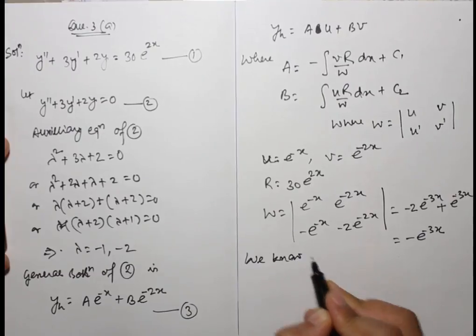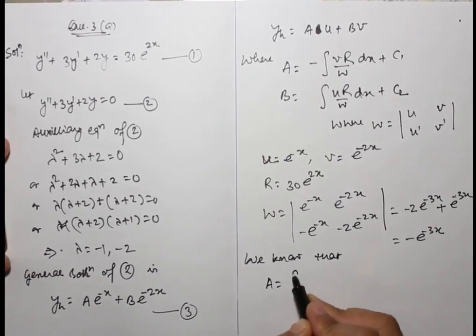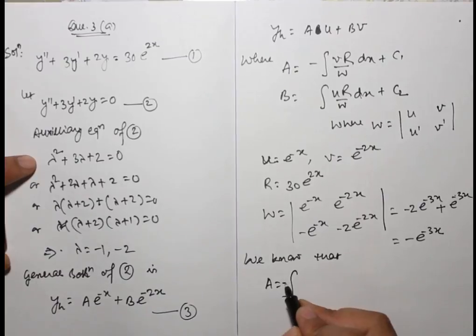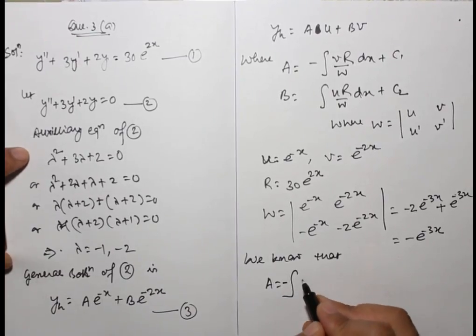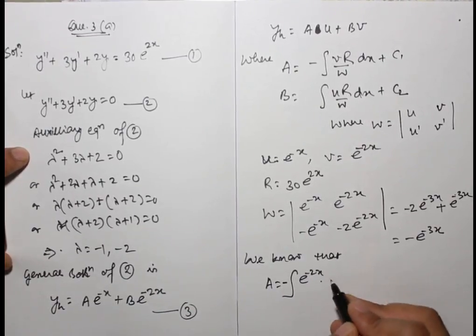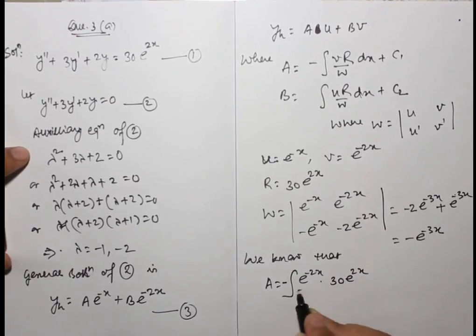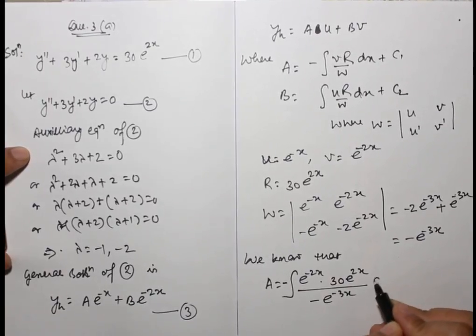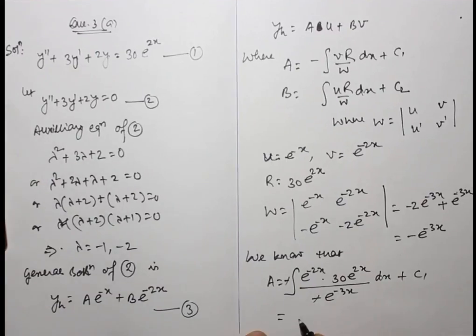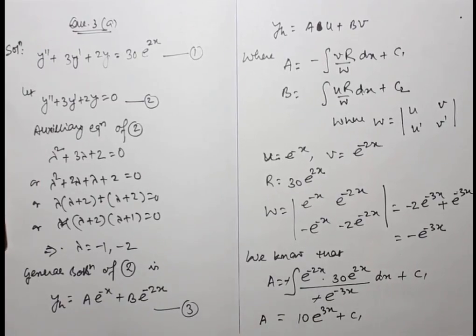We know that A equals minus the integral of v·r upon W dx + c1. Substituting v = e^(-2x) and r = 30e^(2x) over W, we compute this integral to find the value of A.